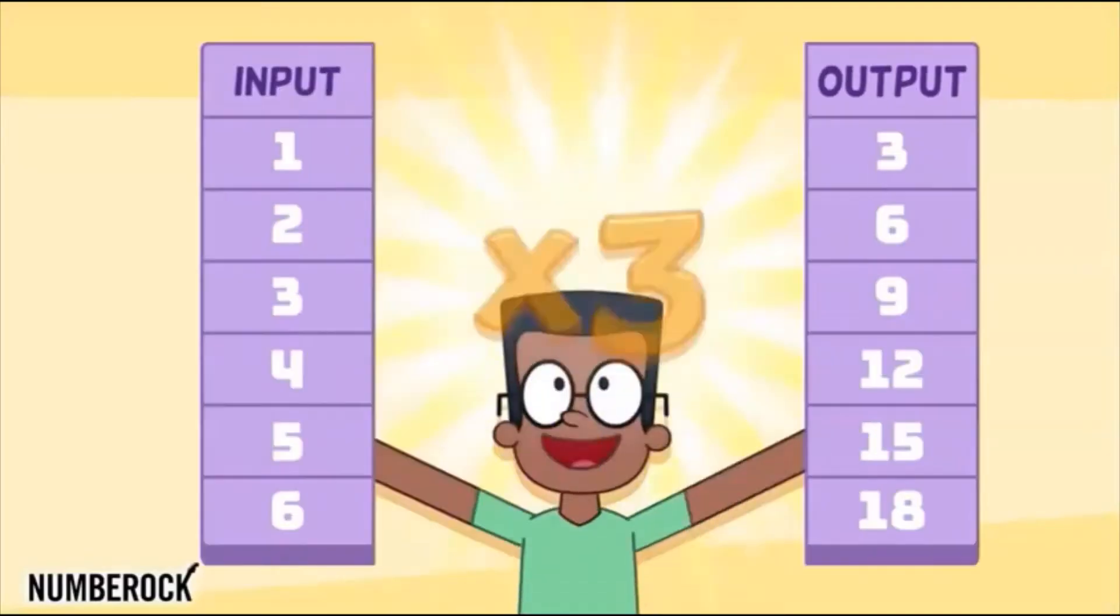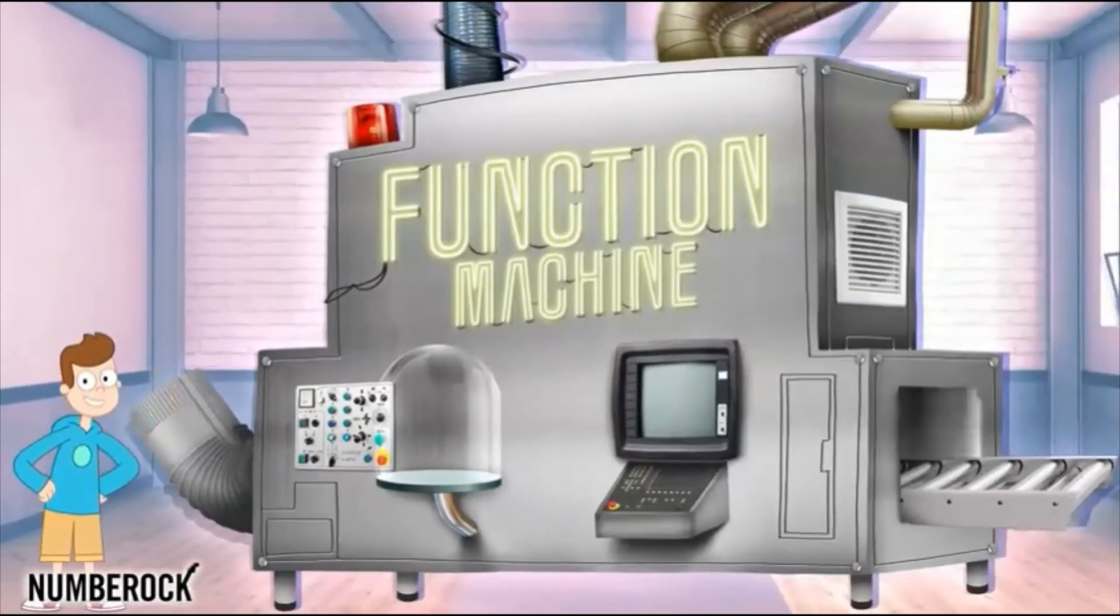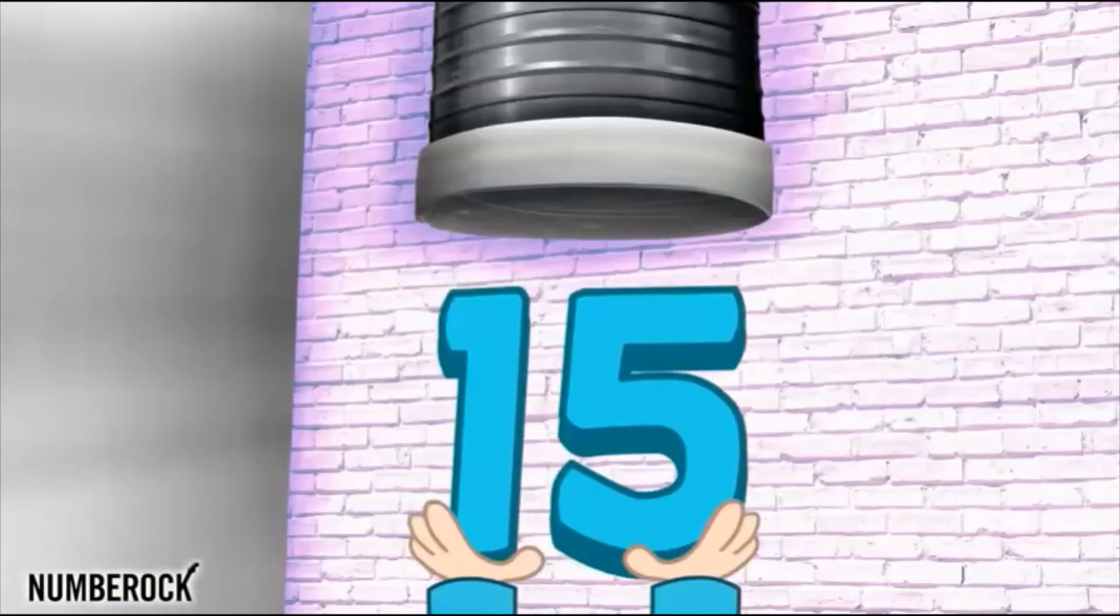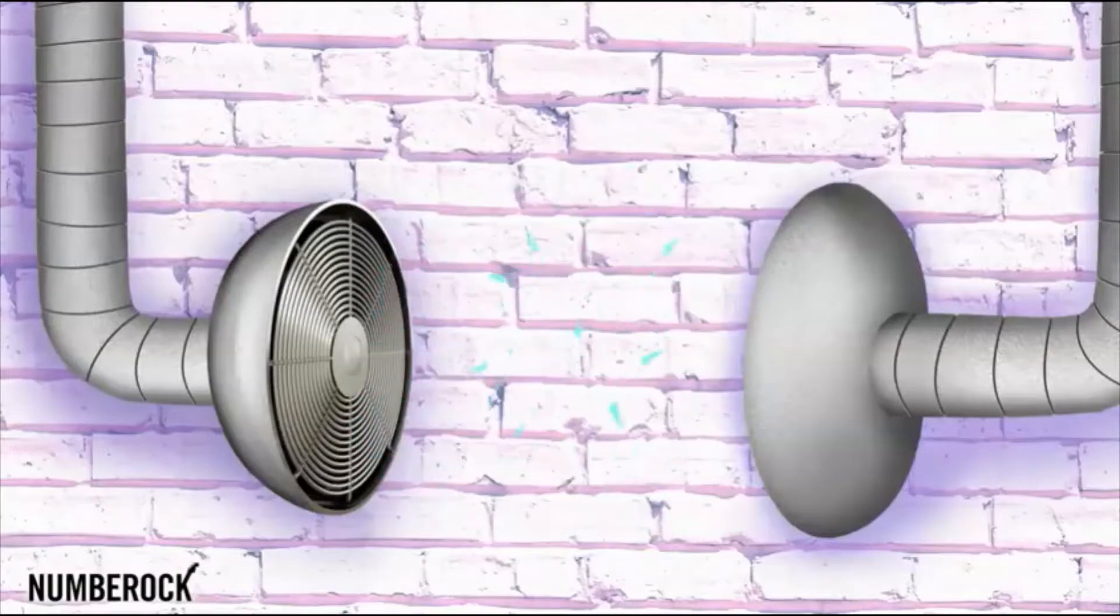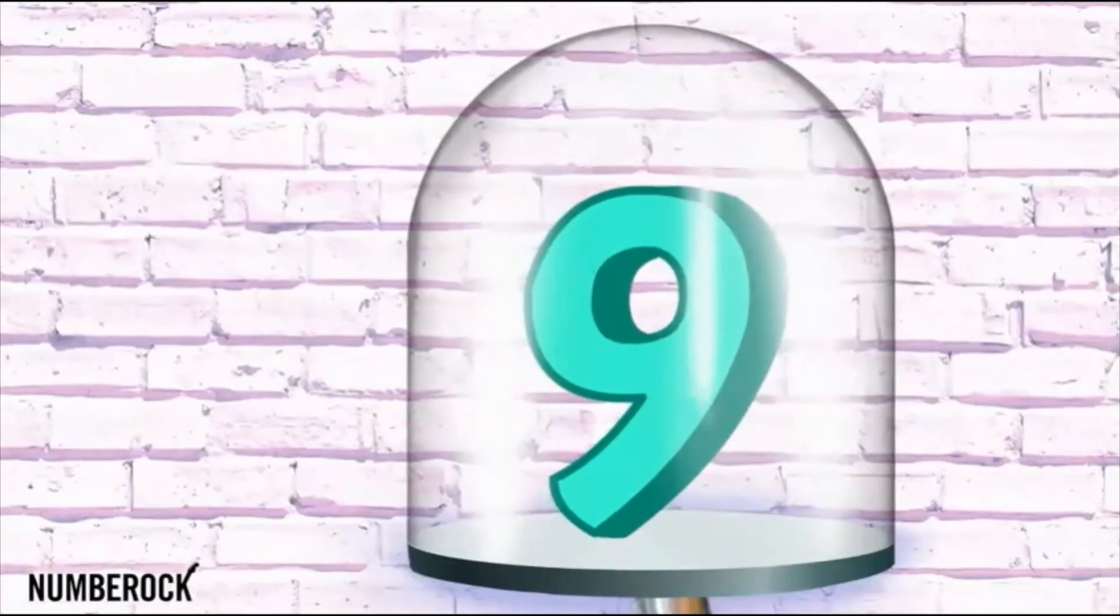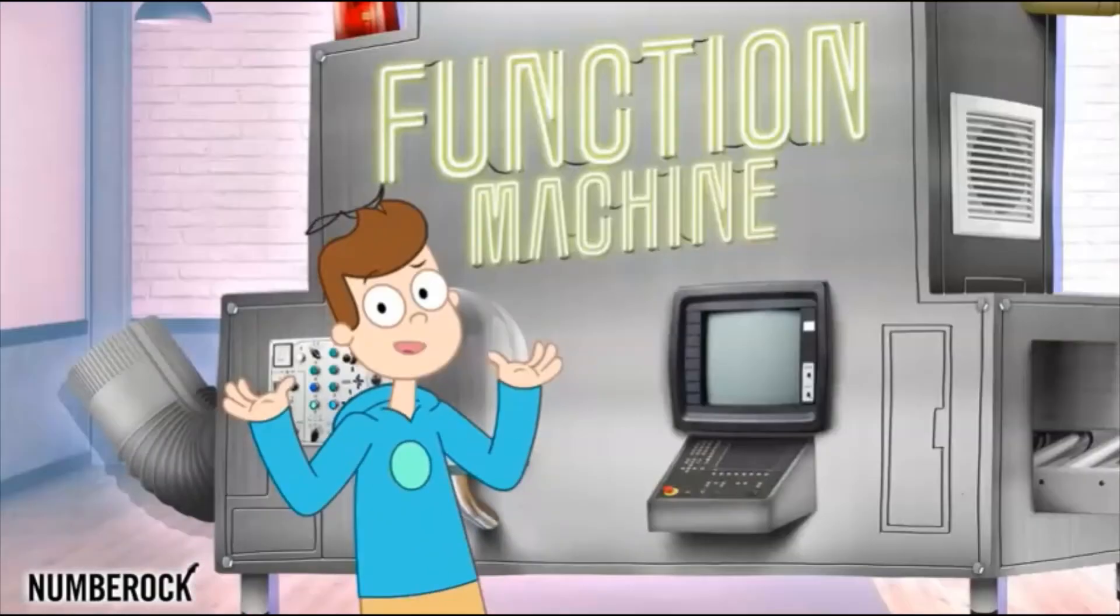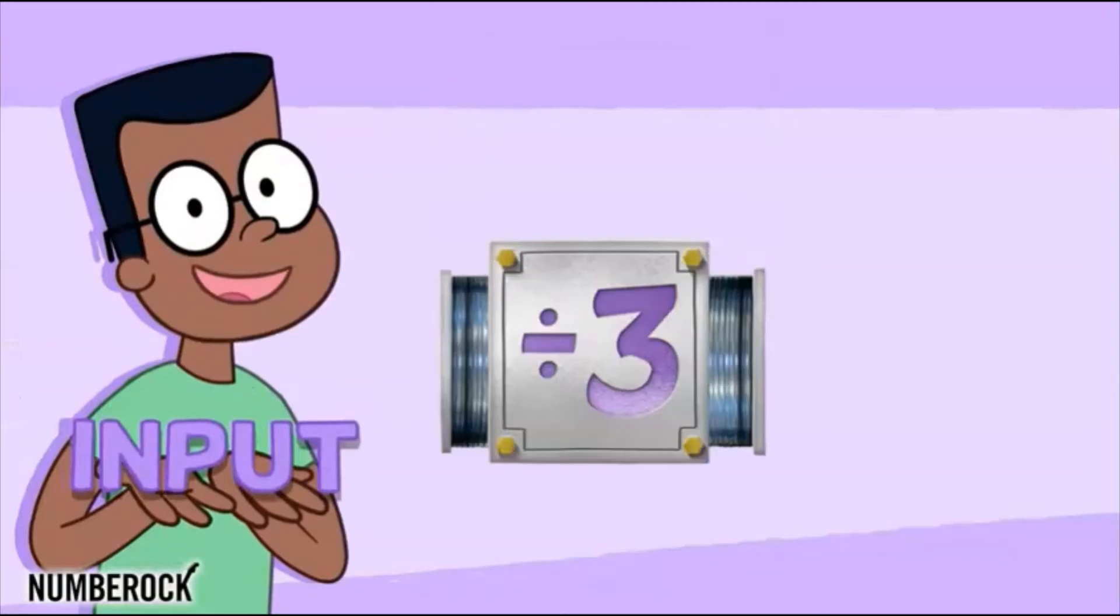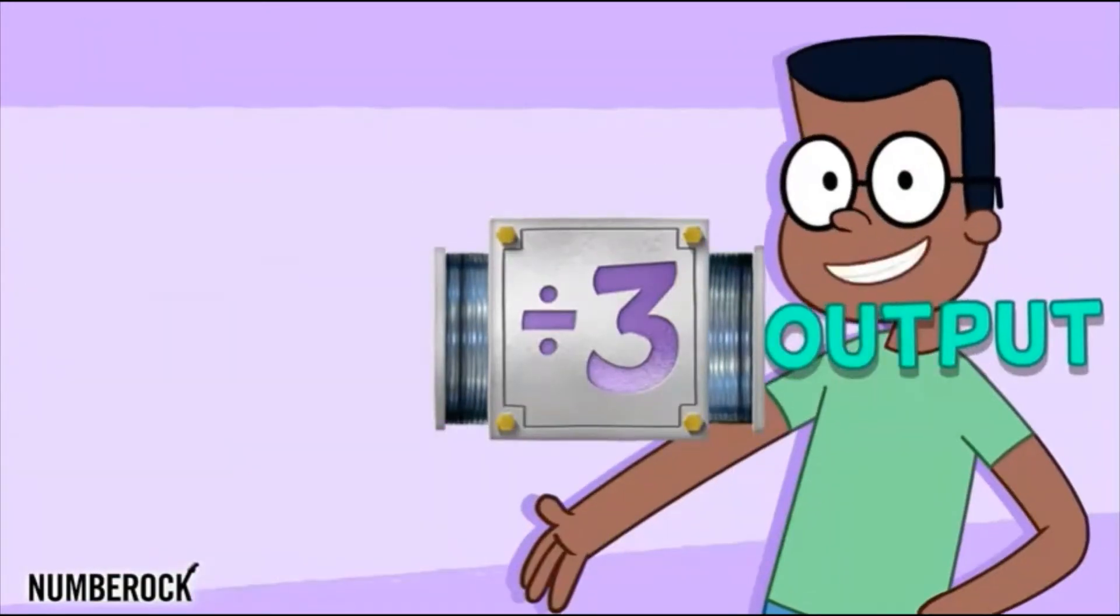I have a function machine, the best you've ever seen. I put in a nine, and out came a three. I put in fifteen, and out came five. Then twenty-seven went in, and out came nine. There's only one thing I wanna know at this junction. What on earth is my machine's function? If you divide any input by three, you'll get the output. So, that's the rule, you see.